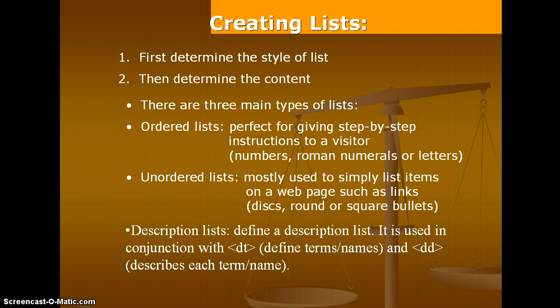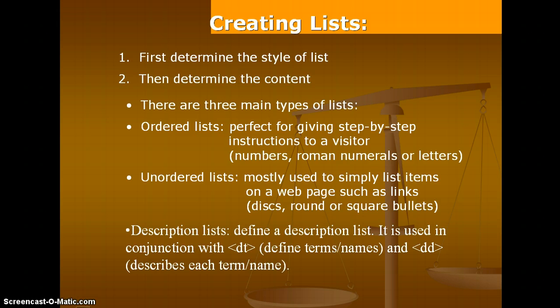There are many advantages to why we are using lists. The first one is to determine the style of list, and the second point is to determine the content of the data. There are different types of lists. Mainly we are using three types. The first one is the ordered list, which is perfect for giving step-by-step instructions to a visitor.